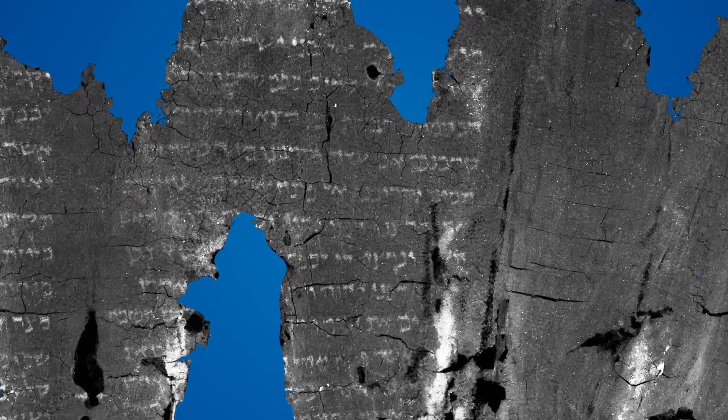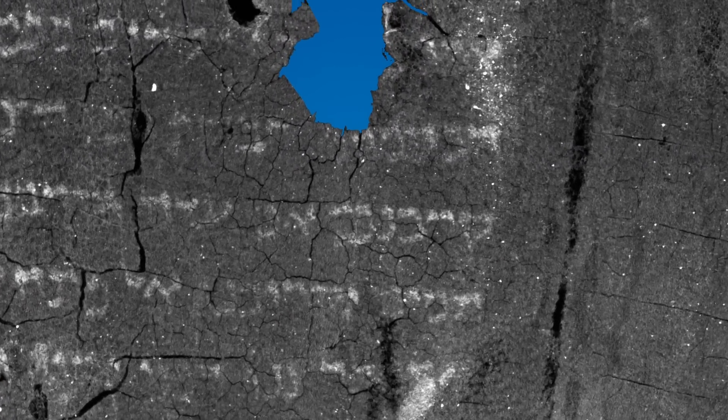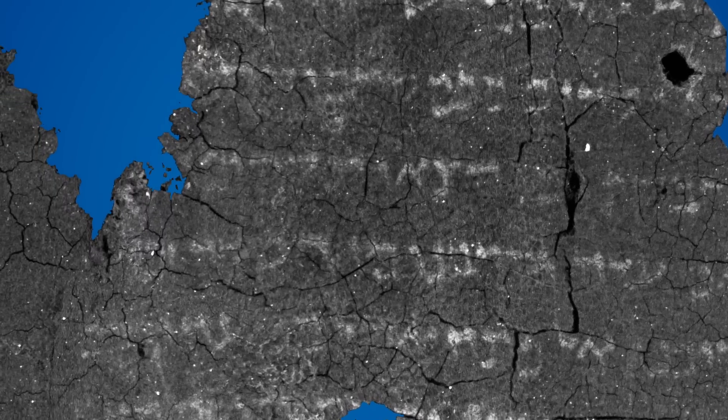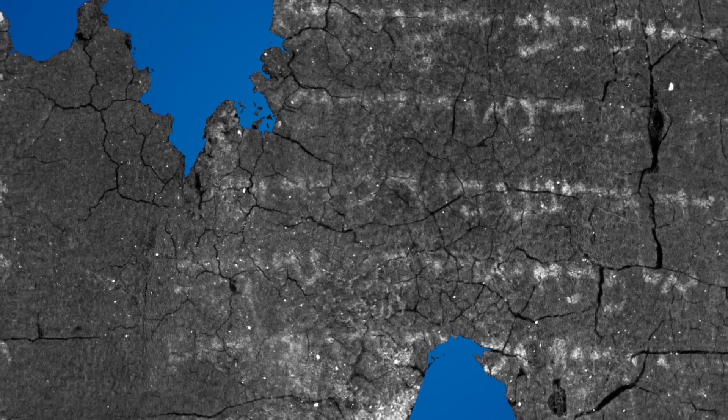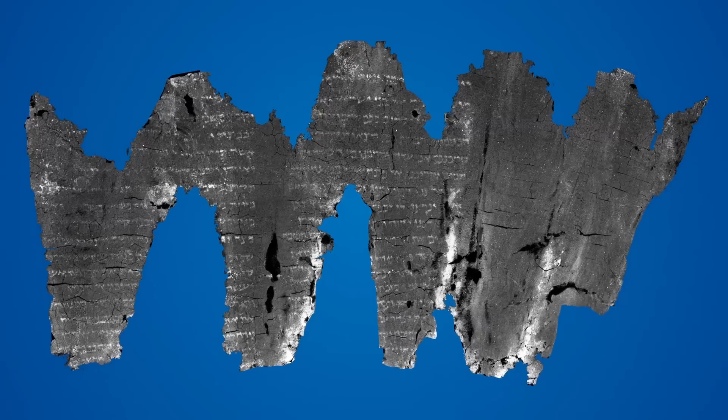Using this pipeline, we have restored and revealed the text of five complete wraps of the En Gedi scroll. The two distinct columns of Hebrew writing reveal the scroll to be the book of Leviticus. This marks the En Gedi scroll as the earliest copy of a Pentateuchal book ever found in a holy ark, a significant discovery in Biblical archaeology.